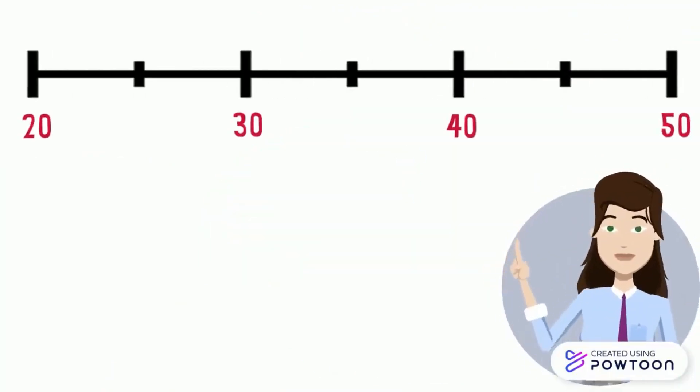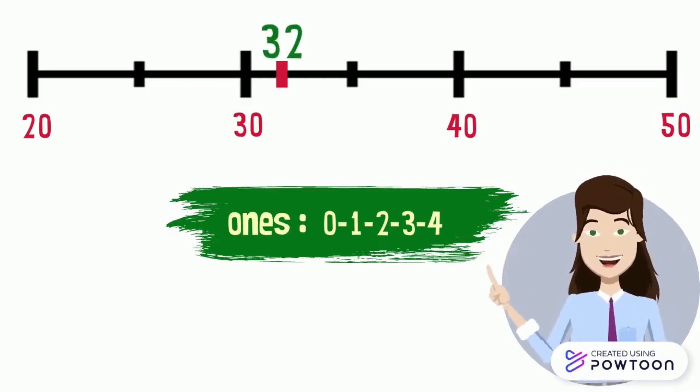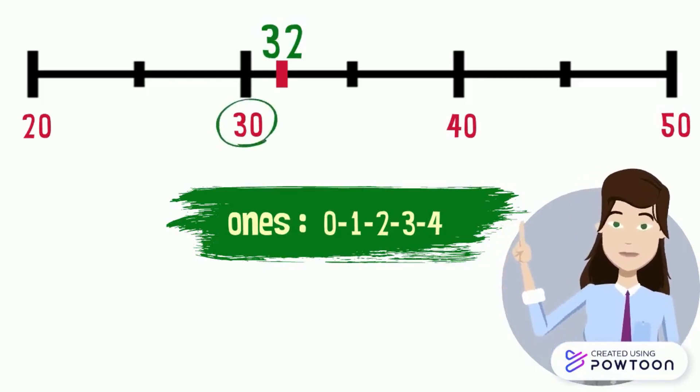So we should know that the number whose one's digit is smaller than 5, such as 0, 1, 2, 3, or 4, is closer to the 10 that comes just before this number. Such as the number 32, the nearest 10 to this number is 30.